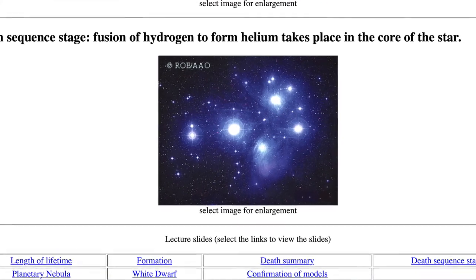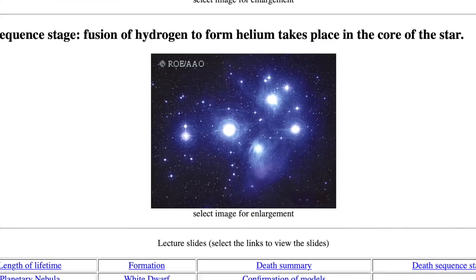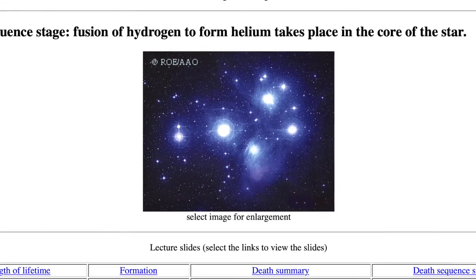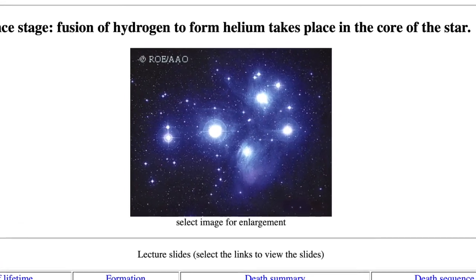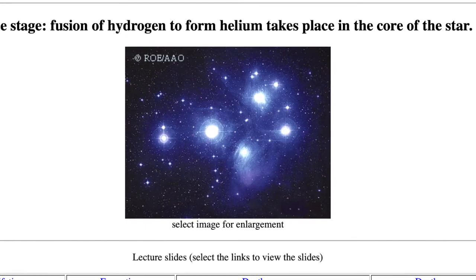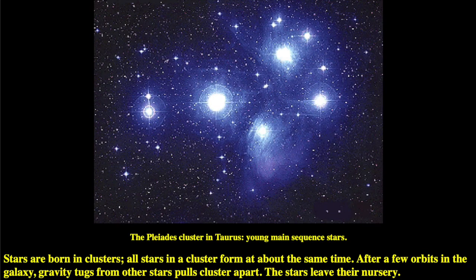The star will spend about 90% of its life in the main sequence stage, which is why 90% of the stars are in the main sequence stage. It is fusing hydrogen to form helium in the core. This picture of the gorgeous Pleiades cluster at the shoulder of the Taurus constellation again illustrates the fact that all stars are born in clusters and all stars in a cluster form at the same time from the same material.